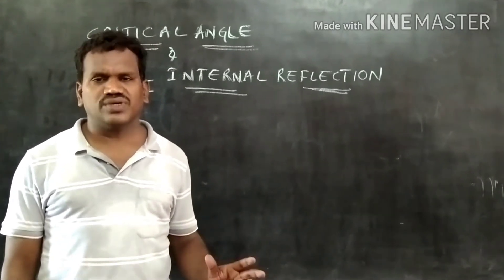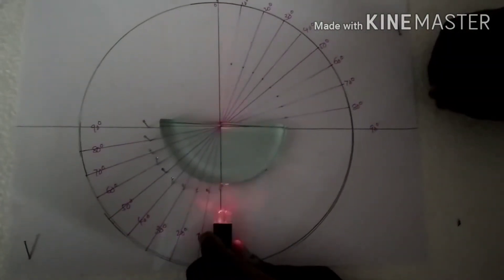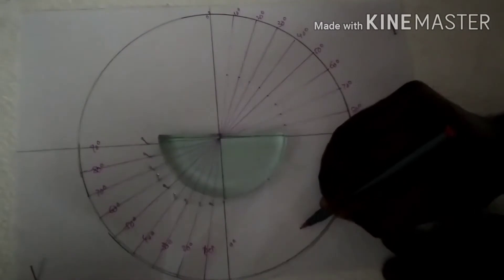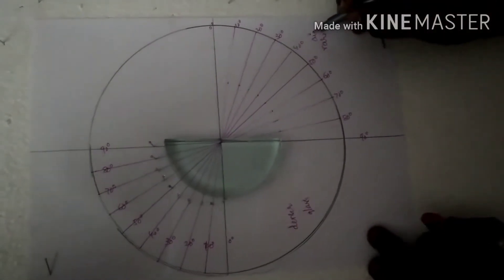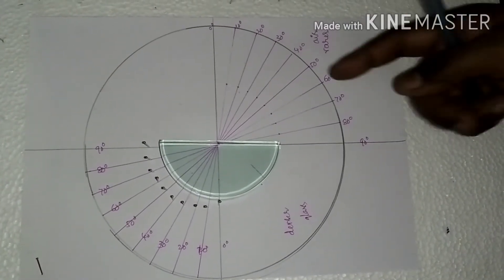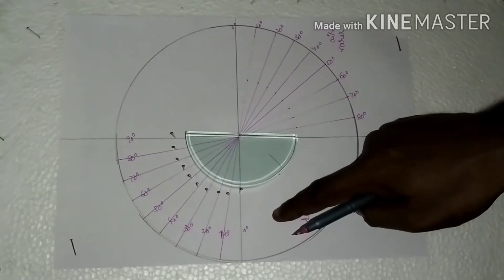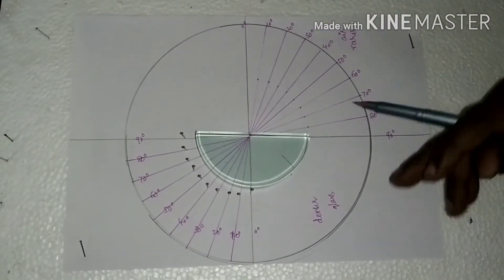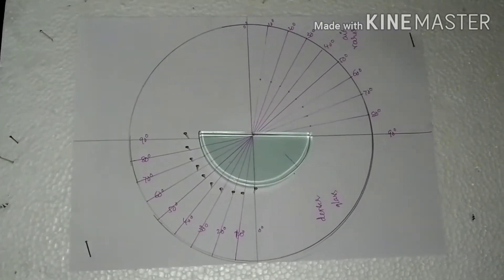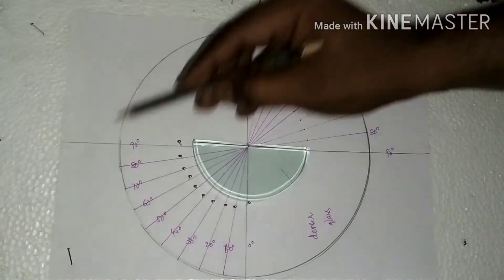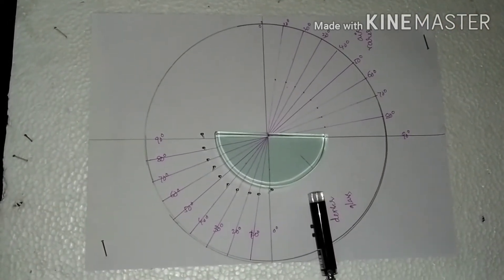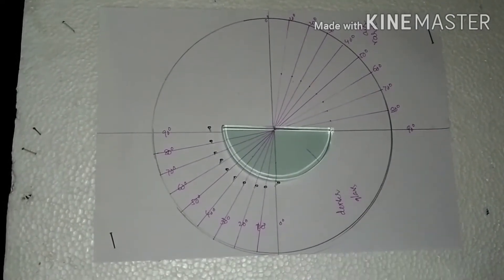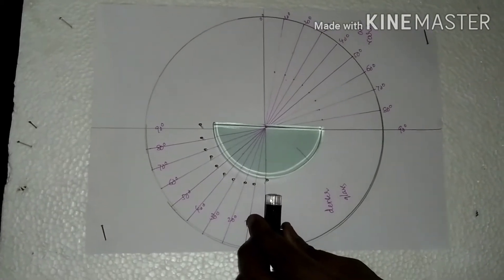Observe the activity we did. In this video we are going to learn the properties of light when it travels from a semi-circular shape, that is from denser to rarer, that is from glass to air. In the previous cases we studied the properties of light when it travels from air to glass, that is from rarer to denser. Now I am going to pass the laser light first at an angle of 0 degrees.